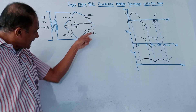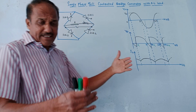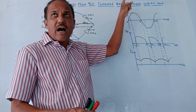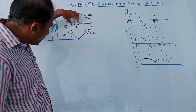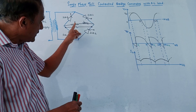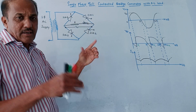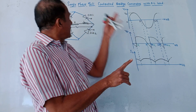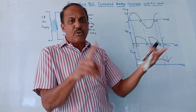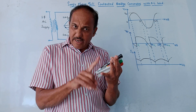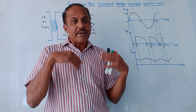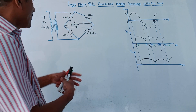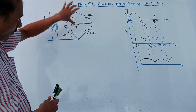This is the circuit diagram for RL load. In the earlier session on the single-phase fully controlled bridge converter with R load, we used only a resistor. The major change here is that instead of a resistor, we are using a resistor and inductor. The last part of this session — explanation of inversion and rectification mode — is the most important part we will discuss at the end.